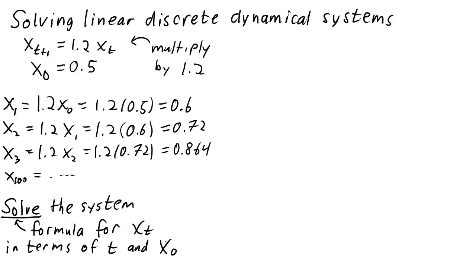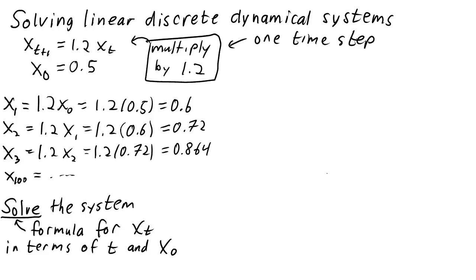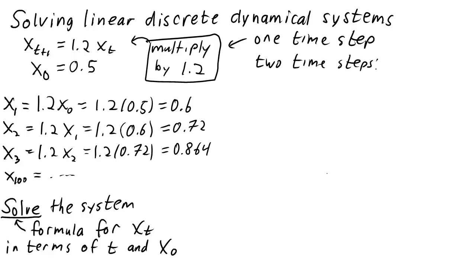We don't have a standard algorithm to solve discrete dynamical systems. In fact, for most such systems, we can't even find a solution formula. But the above system is simple enough that we can find a solution. For this dynamical system, to advance one time step, we must multiply by 1.2. To advance two time steps, we just have to do the same thing twice — multiply by 1.2 twice, or multiply by 1.2 squared.